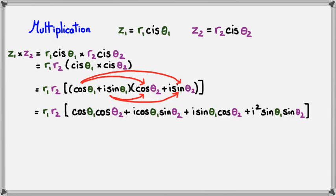Now I'm going to start simplifying this. So I've still got r1 r2 on the outside. Cos theta 1 cos theta 2 stays the same. However, I'm going to move all the real parts. Know that that's actually i squared, so I'm going to bring that up here first. So i squared sine theta 1 sine theta 2. Now I know that i squared is negative 1, so I can replace it with negative.